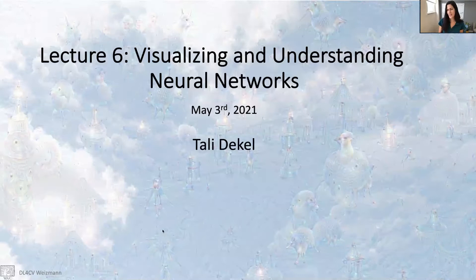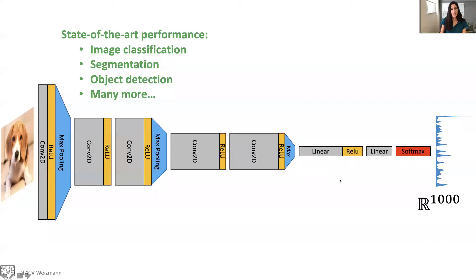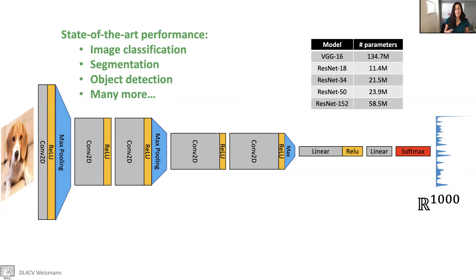Hi everyone, good morning. I'm Tally Deckel and today I'm going to talk about visualizing and understanding neural networks. Deep learning has been a huge revolution to the field of computer vision. We've reached major breakthroughs in important visual tasks like image classification, segmentation, and object detection. Our models became more complex, deeper, with many more parameters — we're living in an era where computer vision has finally started to work, but with all this exciting development we also lost something.